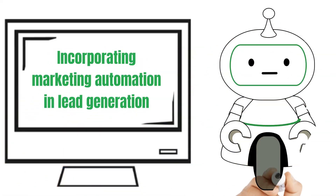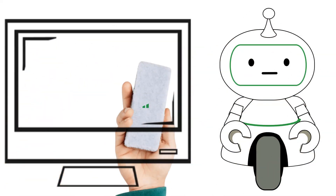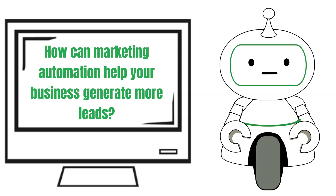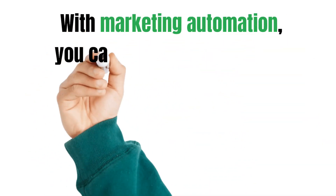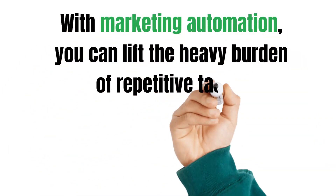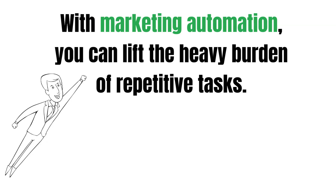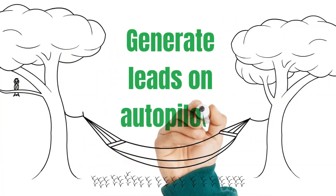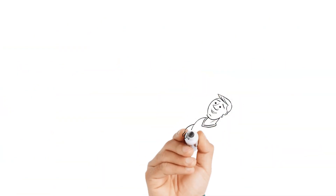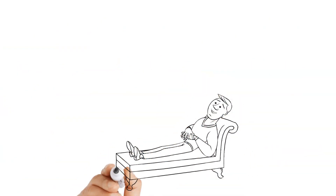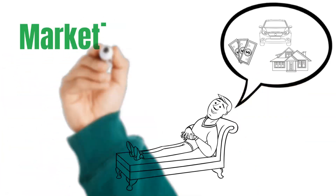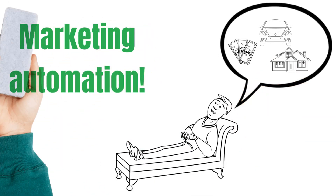Incorporating marketing automation in lead generation — how can marketing automation help your business generate more leads? With marketing automation, you can lift the heavy burden of repetitive tasks. With an easy-to-set-up funnel, you can start generating leads on autopilot. The best part is that you don't need to monitor everything 24/7. And that's the beauty of marketing automation.